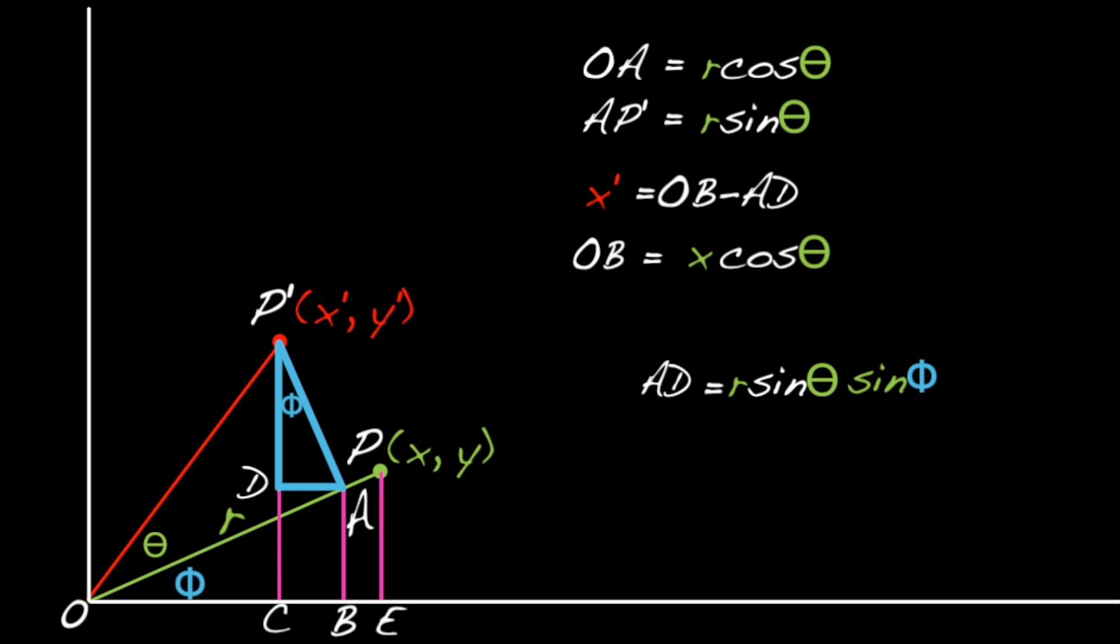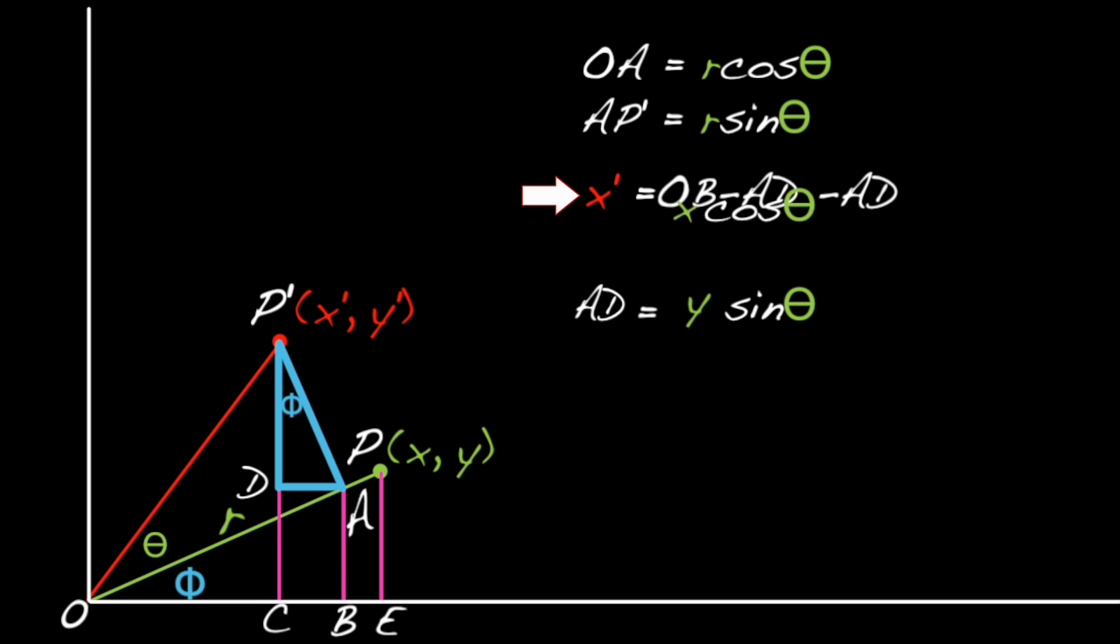Which can be rearranged to be R sine phi times sine theta. And we know that R sine phi is just Y. So, AD equals Y sine theta. Okay, so that means X prime equals X cosine theta minus Y sine theta.